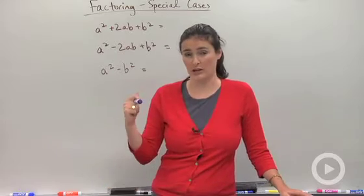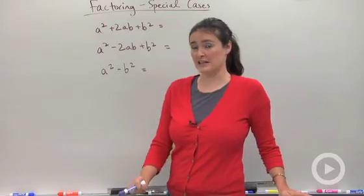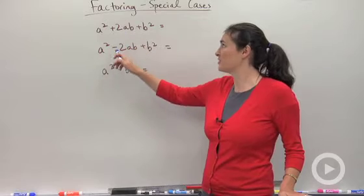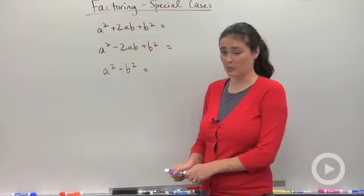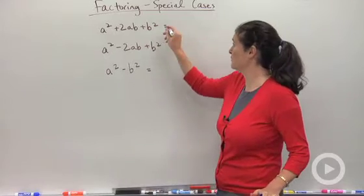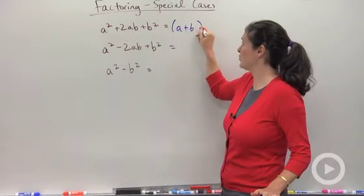Some things you can look for are what we're going to talk about today, special cases. If you see trinomials that look like these first two guys, they're what we call perfect square trinomials because their factored form looks like a binomial squared.